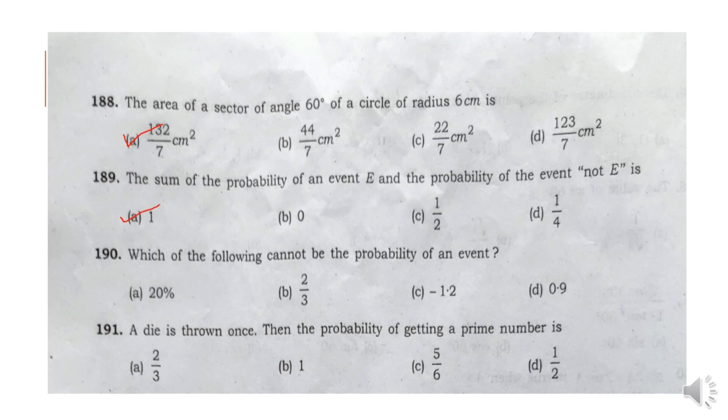Question 190: Which of the following cannot be the probability of an event? Answer: Option C: minus 1.2.